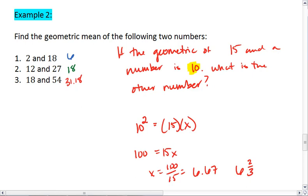If you want to, you can double check that. We take 6 and 2 thirds times 15. We get 100. The square root of 100 is 10. That checks out.